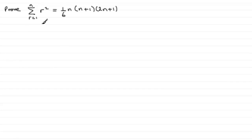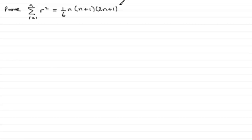This is a very common series that we have to prove by induction, so we should certainly learn this process. We've got to prove that the sum of r squared going from r equals 1 to n equals one sixth n multiplied by n plus 1 multiplied by 2n plus 1. To do this, all we need to do is check that it works for n equals 1 first of all.